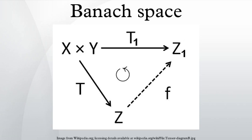Gowers' dichotomy theorem asserts that every infinite-dimensional Banach space X contains either a subspace Y with unconditional basis, or a hereditarily indecomposable subspace Z, and in particular Z is not isomorphic to its closed hyperplanes. If X is homogeneous, it must therefore have an unconditional basis. It follows then from the partial solution obtained by Komorowski and Tomczak-Jaegermann for spaces with an unconditional basis, that X is isomorphic to ℓ2.